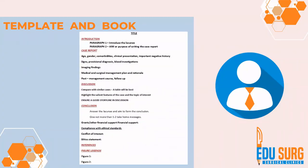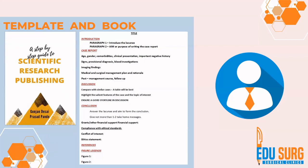Here is a template you can use. The introduction has two paragraphs introducing the lacuna and the aim or purpose of writing the case report. The case report section covers history, presentation, investigations, imaging findings, management, and follow-up. The discussion compares cases and ensures a good storyline, giving only salient features from the case and literature. The conclusion should have no more than one to two take-home messages. Then add your references, compliance with ethical standards, and figure legends. This template is available in the book, which is free for Kindle Unlimited users on Amazon Kindle.